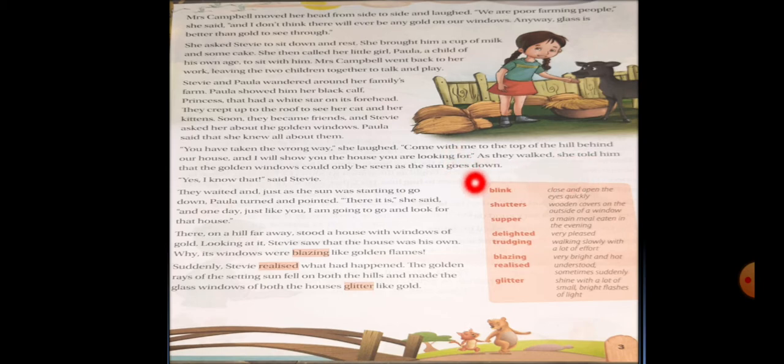As they walked, she told him that the golden windows could only be seen as the sun goes down. Now as they both were walking towards the golden windows, she told him that we can only see the golden windows at the time of sunset.